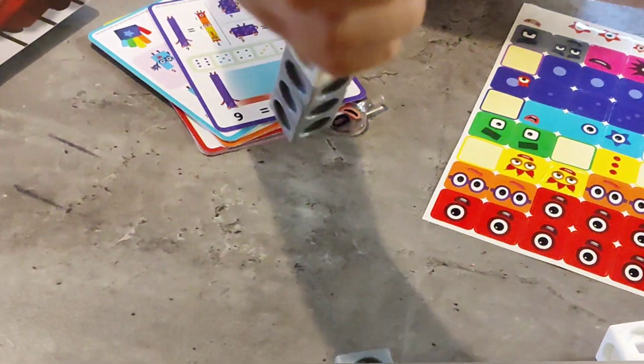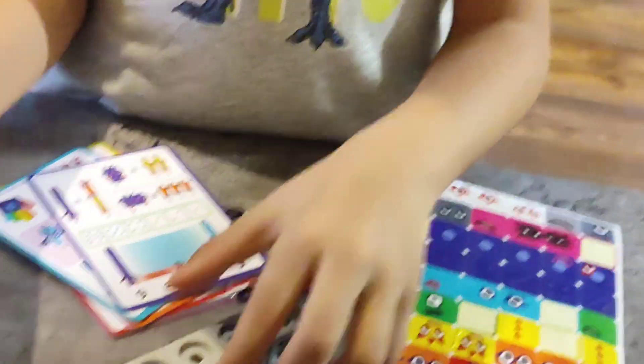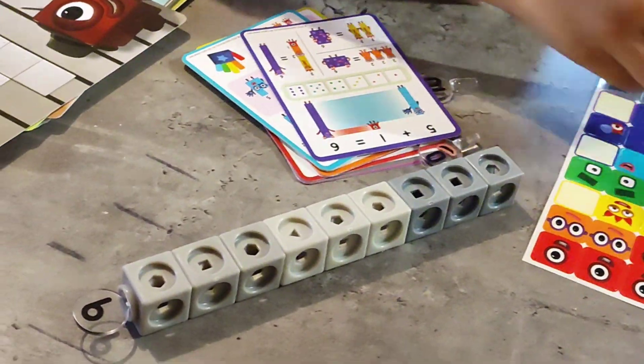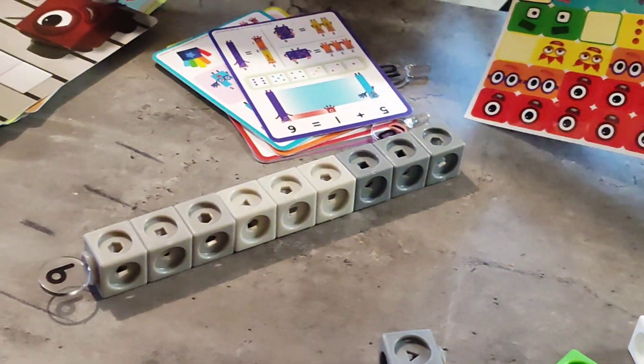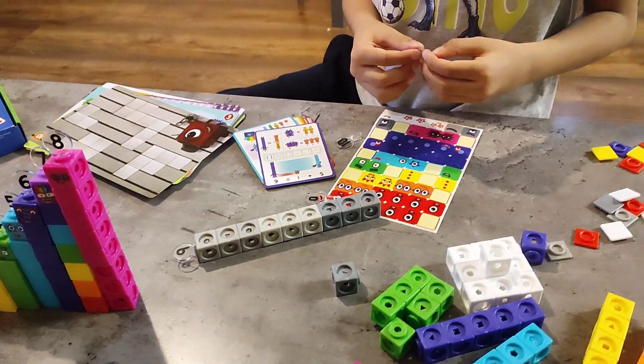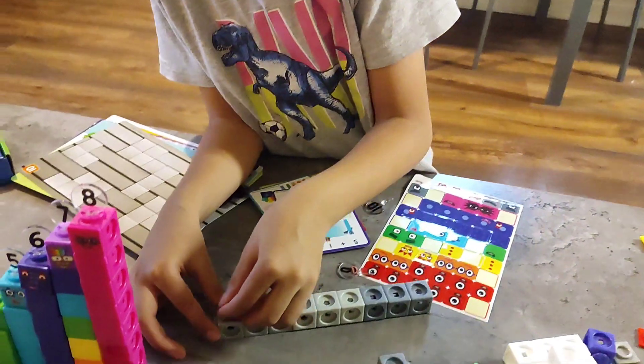This is the number length. And this is... So let's put the stickers on number block 9.